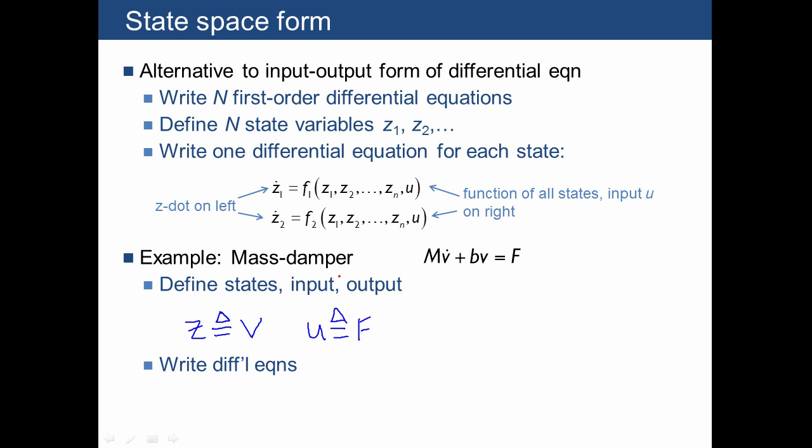And so we need to write z dot, or now there's v dot, in terms of the other states. There's only one state, which is actually going to be v. So we have negative b over m multiplied by v, which in this case is z, plus 1 times u. So notice that we have an equation that's in terms of our states, and it solves for the state derivative on the left, and all of the states and the input are given on the right. So there's our state variable form for the mass damper equation.